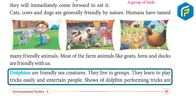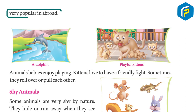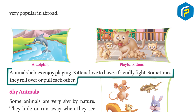Dolphins are friendly sea creatures. They live in groups, learn to play tricks easily, and entertain people. Shows of dolphins performing tricks are very popular. Animal babies also enjoy playing — kittens love to have a friendly fight, and sometimes they roll over or pull each other.